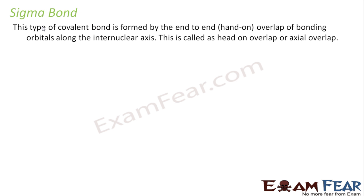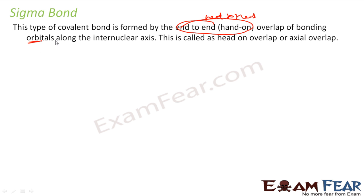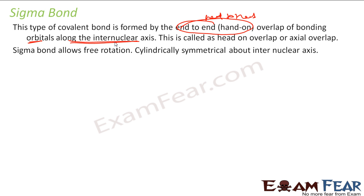Sigma bond is formed by end-to-end or head-on overlap — head-to-head overlap of orbitals along the internuclear axis. The sigma bond allows free rotation and is cylindrically symmetrical about the internuclear axis.